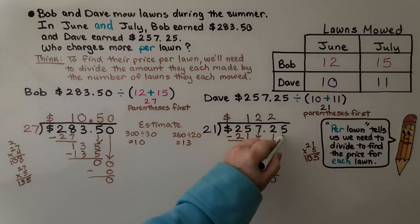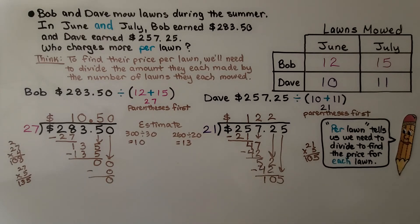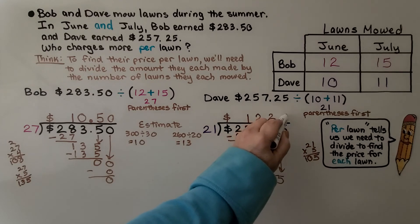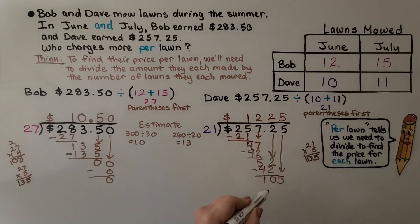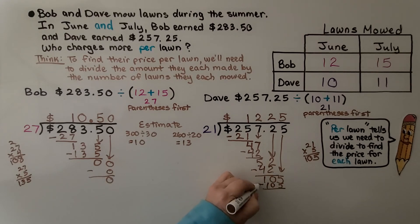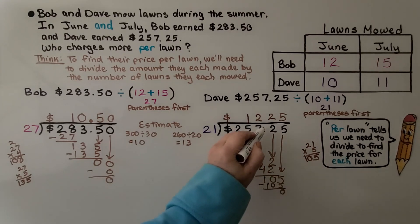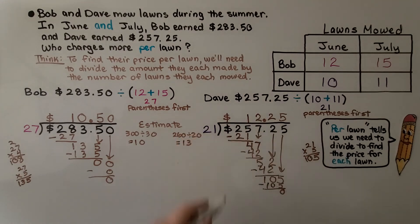Now how many 21's can fit into 52? Still 2. So we're going to write a 2 here. That's 42. We subtract, we get a 10. It's this 5's turn to come down. How many 21's are in 105? Well, 21 times 5 is 105, so we can put a 5 here. It is 105. We subtract it as 0 remainder. Our decimal point goes straight up into the quotient because that's a whole number. We know Dave charged $12.25 per lawn.